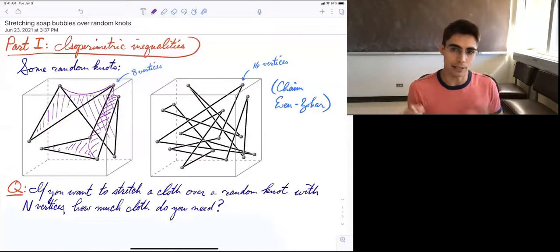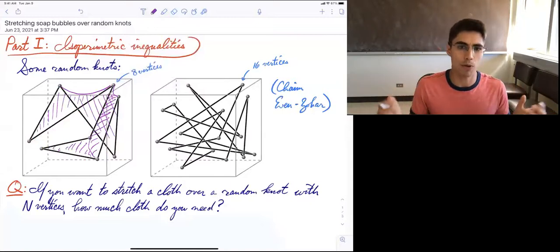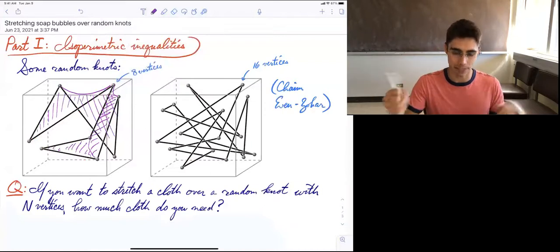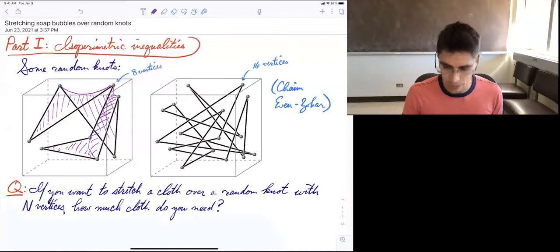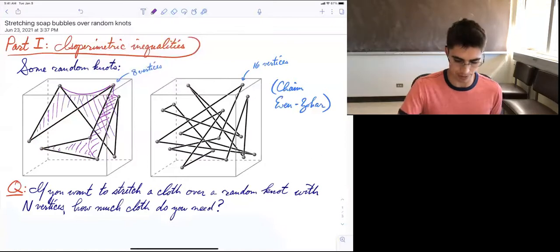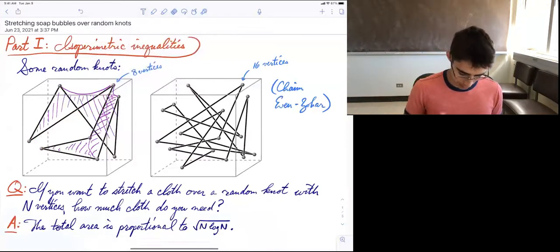You can think of this as a cloth or like a soap bubble, like you took this frame and you dipped it in a bucket of soap and what comes out. And the question is, how much cloth or how much soap? What is the area that you need to fill it in most efficiently?